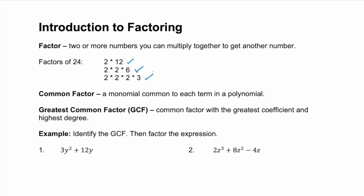Now, a common factor is a monomial that's common to each term in a polynomial. And even more important with factoring is the GCF, or the greatest common factor. The GCF is a common factor with the greatest coefficient and highest degree.